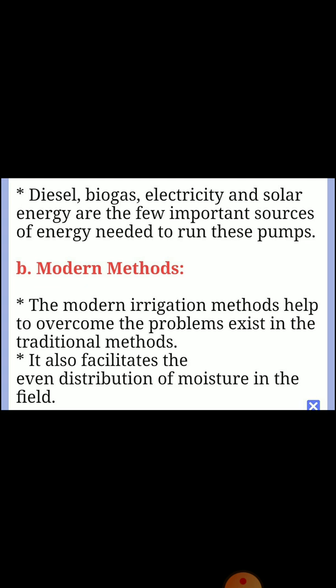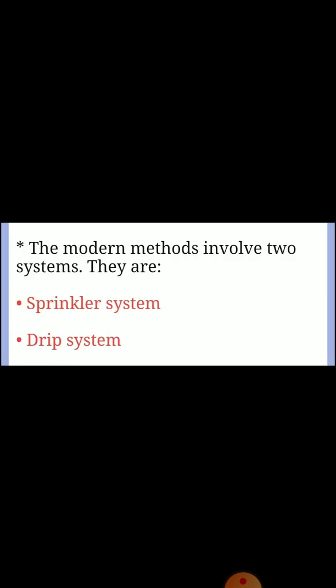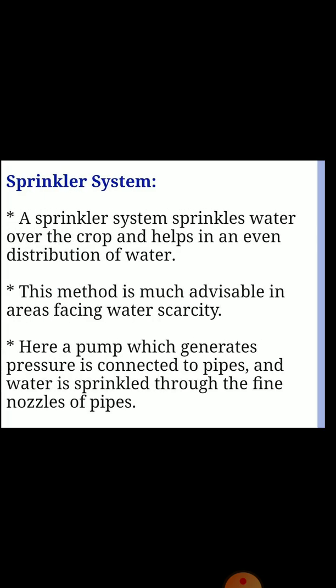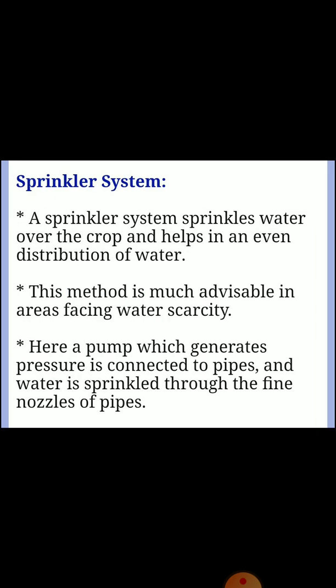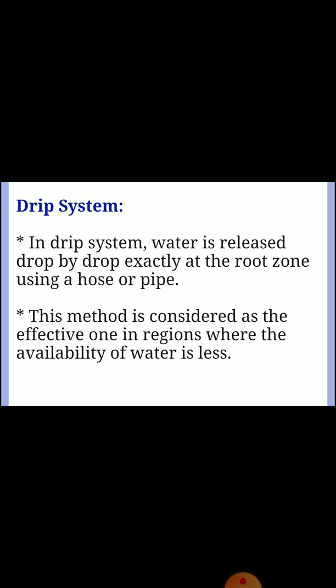Modern irrigation methods help overcome the problems of traditional methods and facilitate even distribution of moisture in the field. They involve two systems: sprinkler system and drip system. In the sprinkler system, water is sprinkled over the crop for even distribution; this method is advisable in areas facing water scarcity. A pump generates pressure connected to pipes, and water is sprinkled through fine nozzles. In the drip system, water is released drop by drop exactly at the root zone using a hose or pipe; this is considered the most effective method in regions where water availability is less.